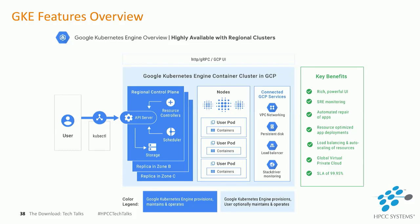Google Kubernetes Engine has many features and benefits. Some of the features it has are Kubernetes CLI support, load balancing and auto-scaling, cost efficiency, virtually no downtime, and when compared to the competition, it has almost 50 times more nodes per cluster.